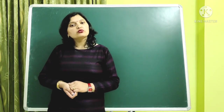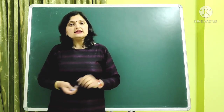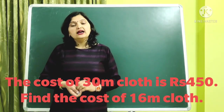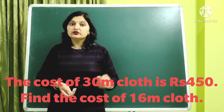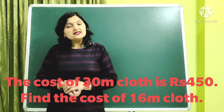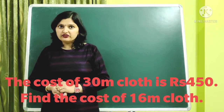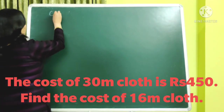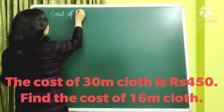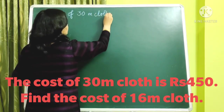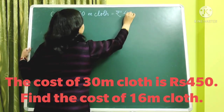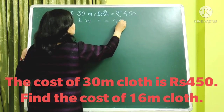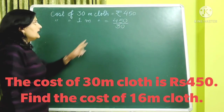Now let us discuss a few questions based upon the unitary method. The question is: the cost of 30 metres of cloth is rupees 450 — find the cost of 15 metres of cloth. You have been given the cost of 30 metres and you have to find the cost of 15 metres. For this, we first find the cost of one metre: 450 divided by 30.